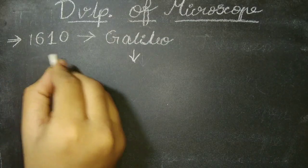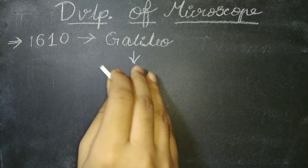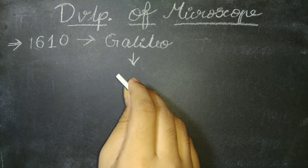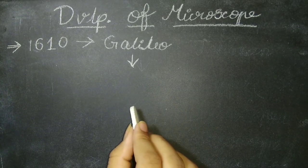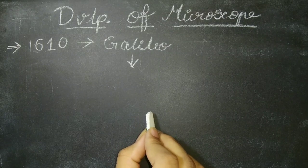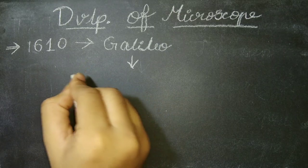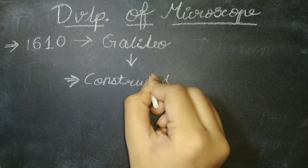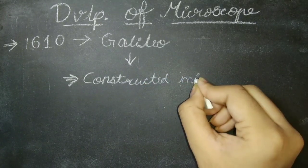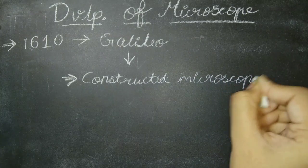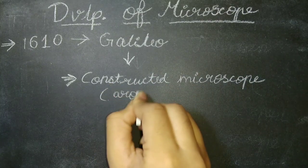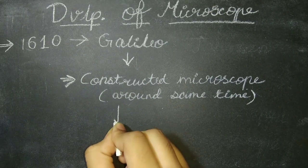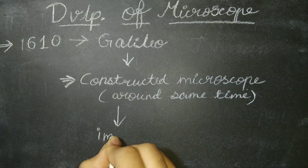And in 1610, Galileo also constructed a microscope at around the same time, but it was an improved version of the microscope that contains a devising mechanism by which focus can be done.